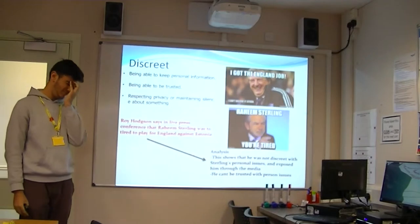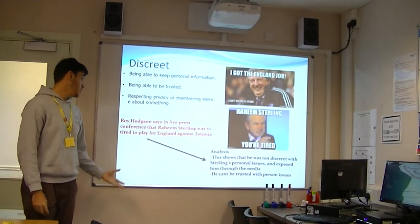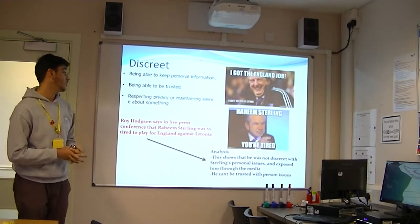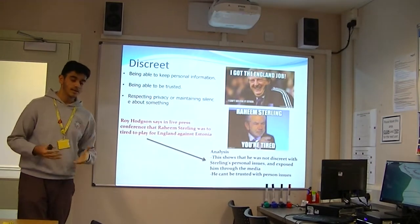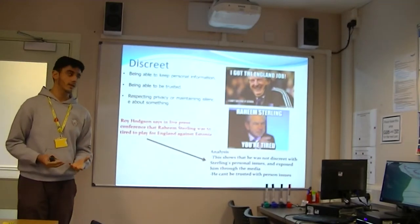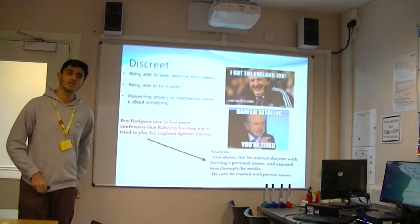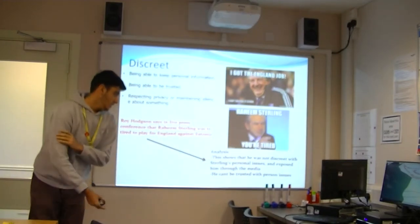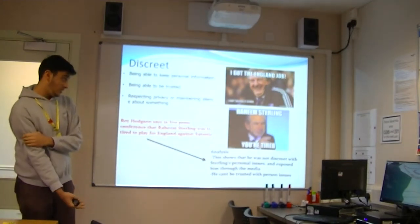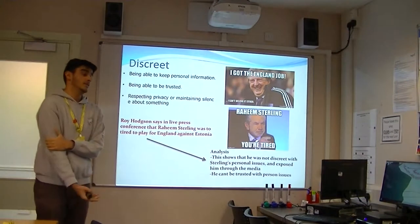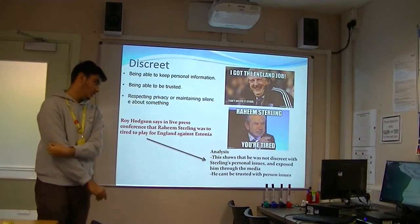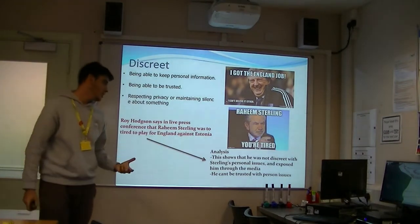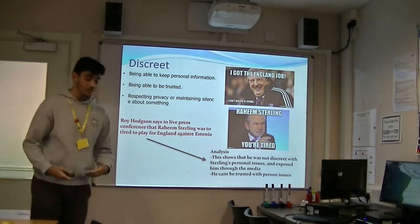I'm going to give an example of a manager who has not been discreet. Roy Hodgson said in a live press conference that a player was tired to play for England against Estonia. This had a huge effect because he mentioned it in the media, which goes all around the world. This shows that he was not discreet with the player's personal information, and it could be debated whether he is the right manager for England if he can't be discreet. He cannot be trusted, this shows.